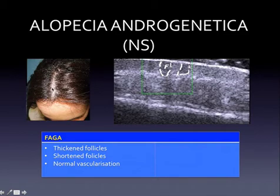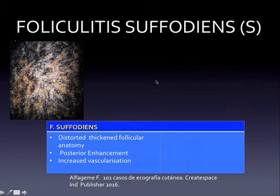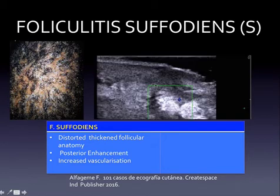This is a case of female alopecia androgenetica. Regarding scarring alopecia, the most important is folliculitis decalvans, which is very common in phototypes with darker skin. What we would see is a distorted and thickened follicular anatomy, sometimes with posterior enhancement and increased vascularization — reflecting the distortion of the normal follicle structure observable in these patients.